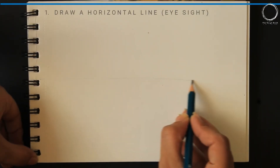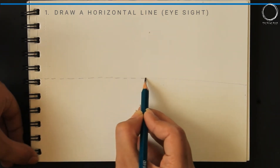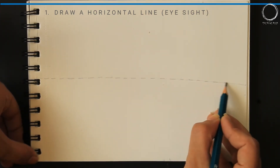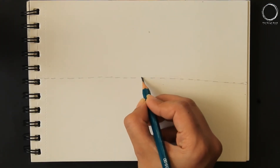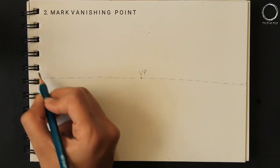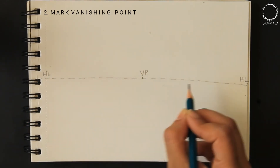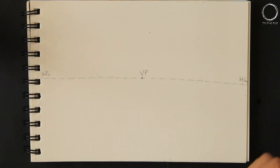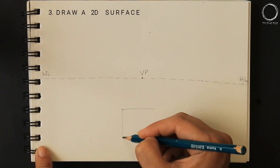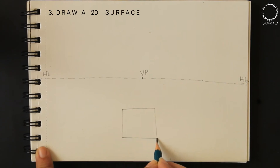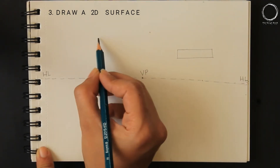Let's look at a quick recap of the steps. The first step is to draw a horizontal line that is the eyeline. The second step is to mark a vanishing point — here I'm marking a vanishing point right at the center of the horizontal line. The third step is to draw a 2D surface according to the thickness and placement of the object.